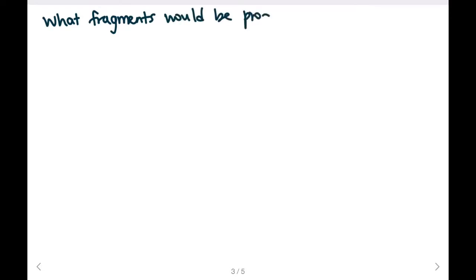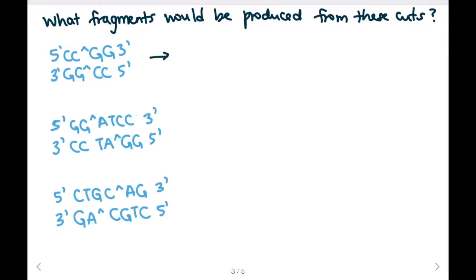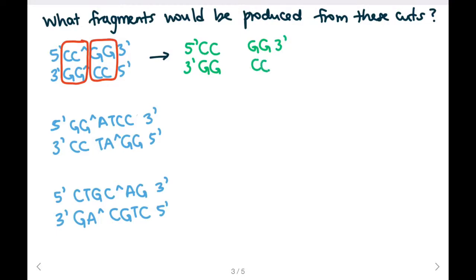What fragments would be produced from these cut sites? I'm going to use the arrows to guide me to create the shape of the fragments. The resulting fragments are 5' C-C and 3' G-G from the first fragment on the left, and then on the right we have G-G-G-3' and C-C-5'. This is called blunt ends because we cut straight through the center, producing no overhangs.